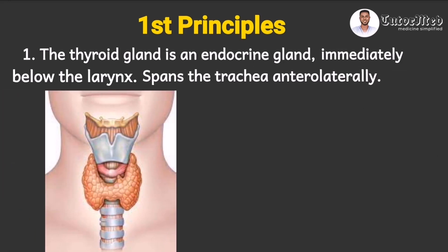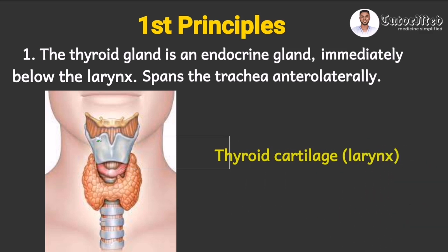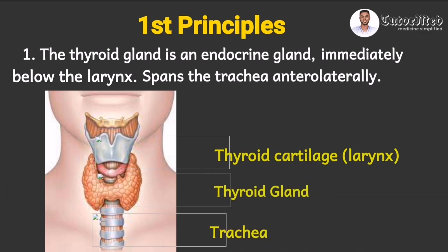Let's use this diagram to illustrate this. This is the diagram of the neck showing the neck structures. This structure here is called the thyroid cartilage, which is part of the larynx, and the structure here is known as the trachea. This is the thyroid gland — situated immediately below the larynx, below the thyroid cartilage. You can see the lobes spanning from the lateral sides of the trachea, with a lobe also located anterior to the trachea.